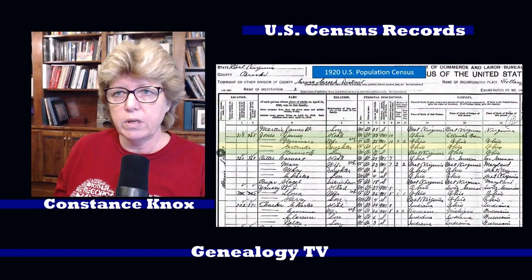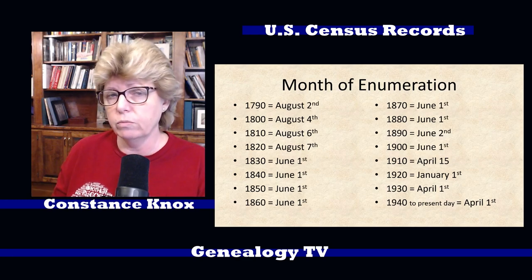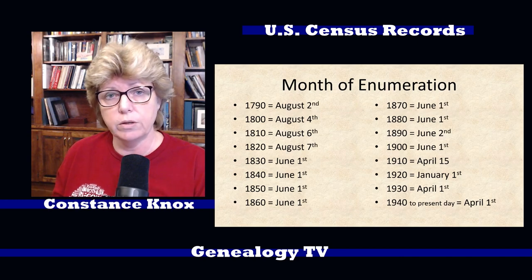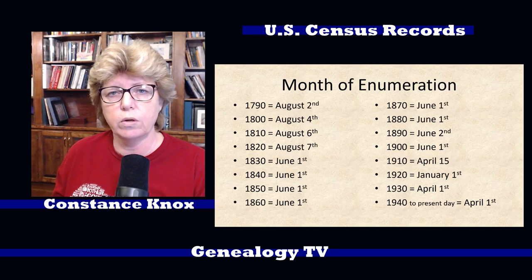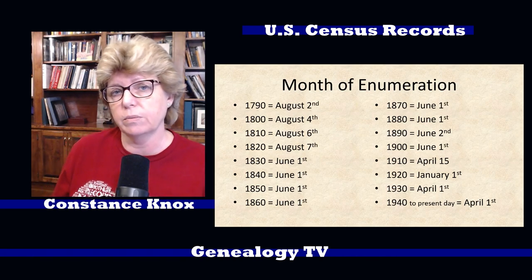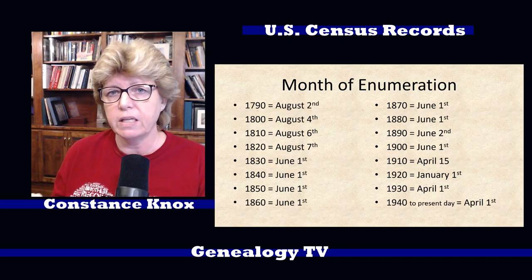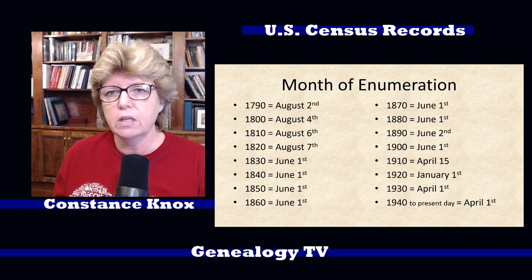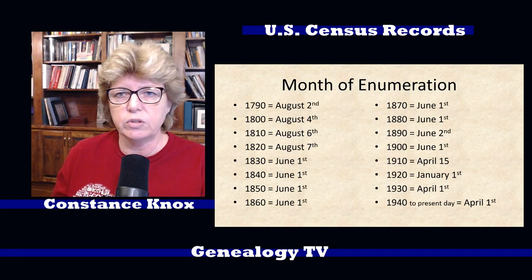Moving on to my next slide — one of the things I want you to pay attention to is the month of enumeration. This is really important if you're trying to estimate a person's age or birth year. Census schedules go from 1790 to present day, but are only available to us due to the privacy act through 1940. The enumeration month on the early schedules was in August; in 1830, 40, 50, 60, 70, 80, 90, and 1900 it was in June; in 1910 it was April; in 1920 it was January 1st; in 1930 it was April 1st; and present day has been in April.